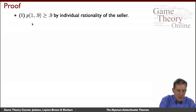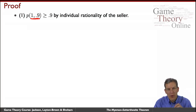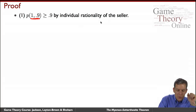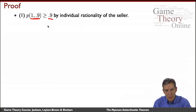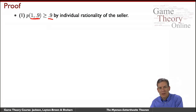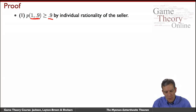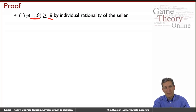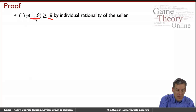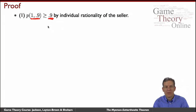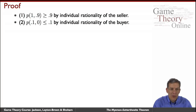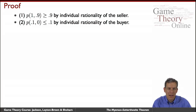First, when values are (1, 0.9): by individual rationality of the seller, the price p(1, 0.9) must be at least 0.9, otherwise the seller doesn't want to sell. When values are (0.1, 0): the price can't be more than 0.1, otherwise the buyer won't want to buy. Individual rationality means the price in that case has to be below 0.1.